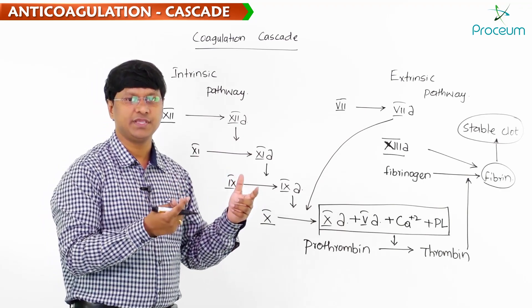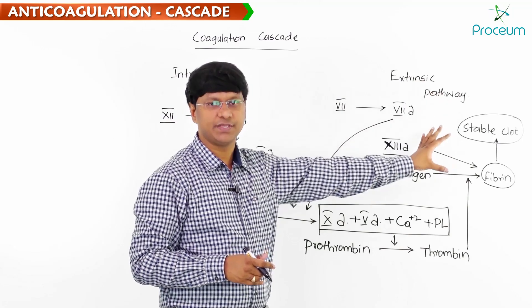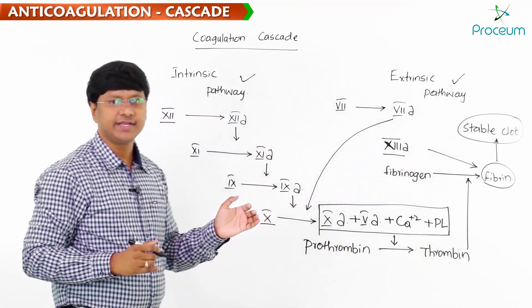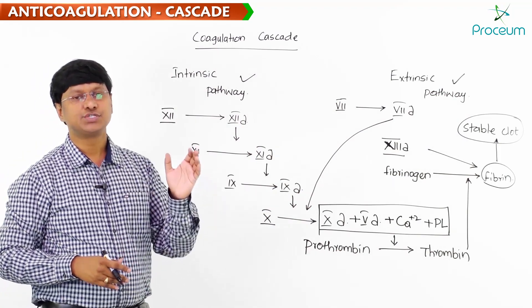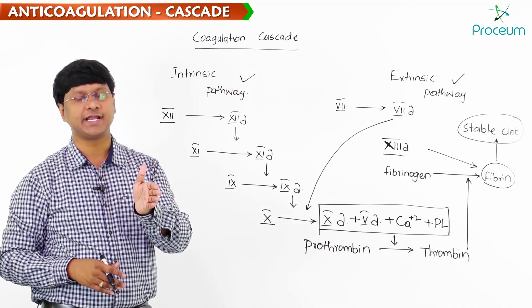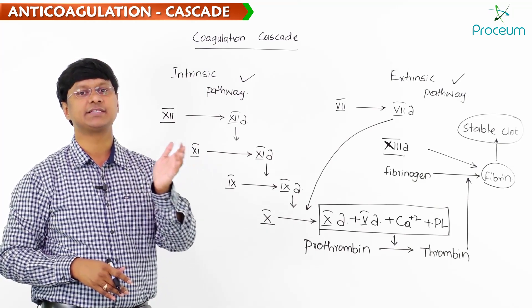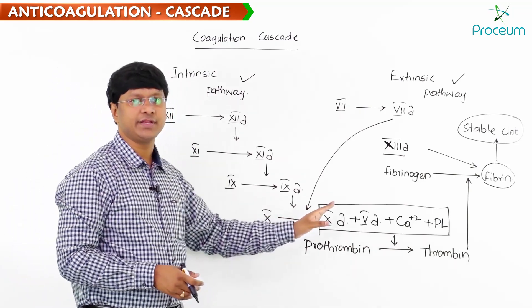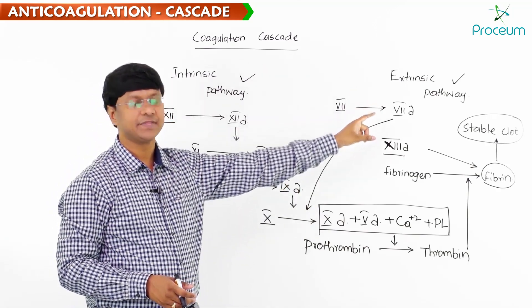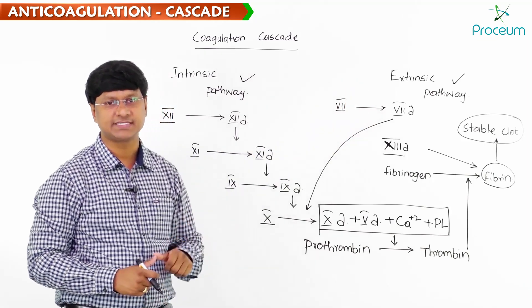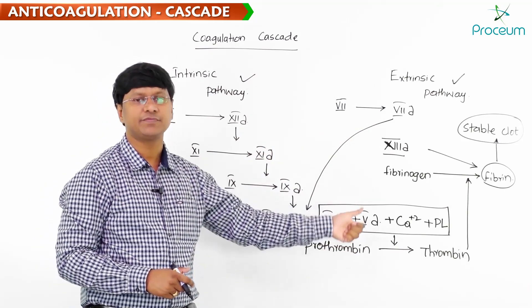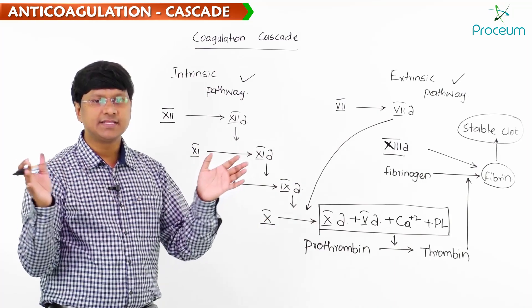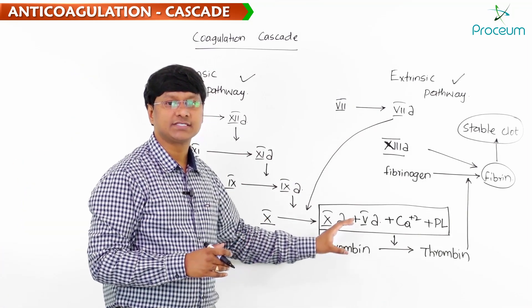To summarize: the intrinsic pathway begins with factor 12 converting to 12A, which acts on 9, converting it to its activated form. Activated factor 9 acts on factor 10, converting it to 10A. The extrinsic pathway also converts factor 10 to 10A via activated factor 7A. Then 10A, along with activated factor 5, calcium, and phospholipid — this entire complex acts on prothrombin. This is called the prothrombin converter, producing thrombin.